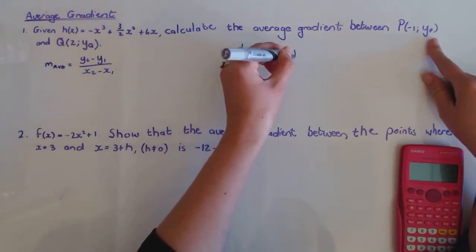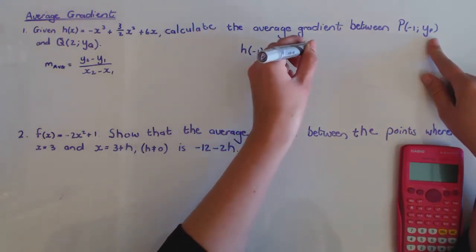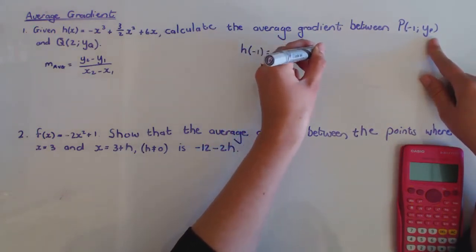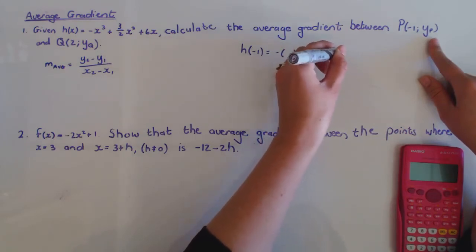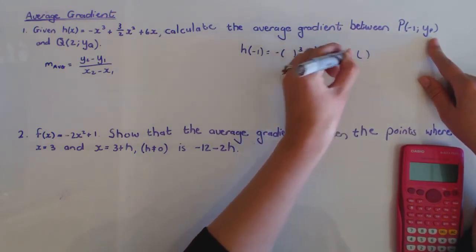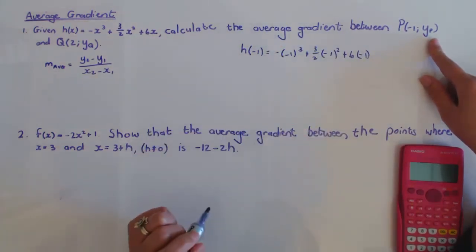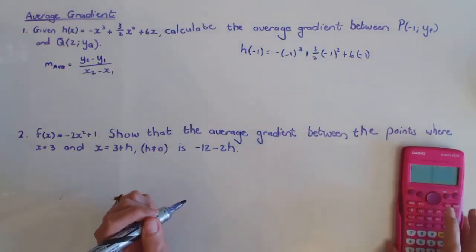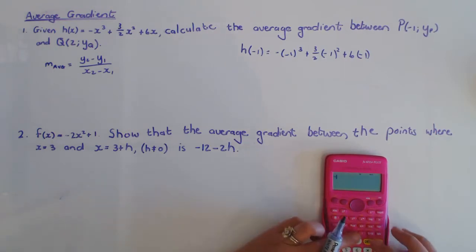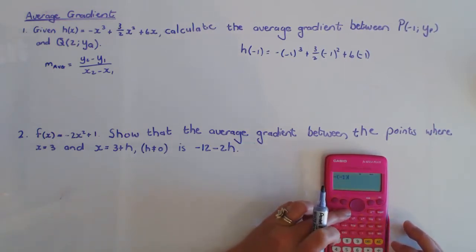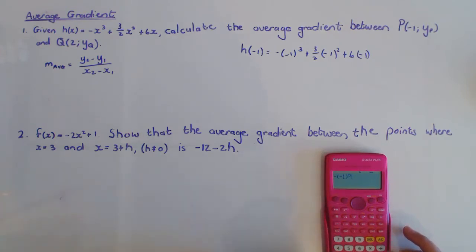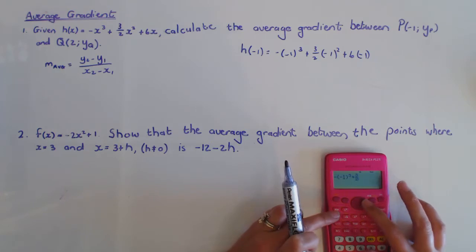So I have -x³ + 3/2x² + 6x, where x is negative 1, and that you can actually just use your calculator for. I think it is -3.5 or -7/2, but let's just quickly check.